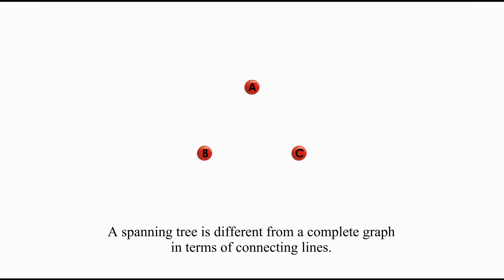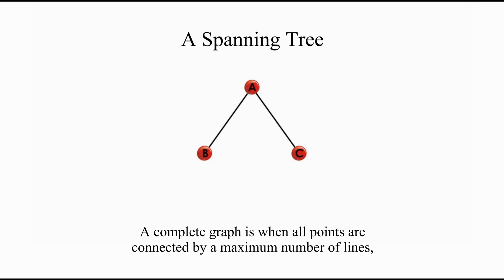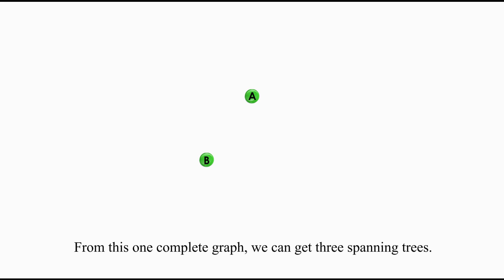A spanning tree is different from a complete graph in terms of connecting lines. A complete graph is when all points are connected by a maximum number of lines, while a spanning tree is when all points are connected by a minimum number of lines. From this one complete graph, we can get three spanning trees.